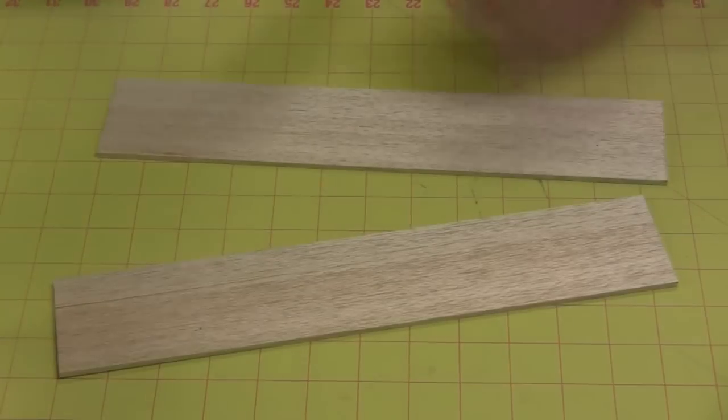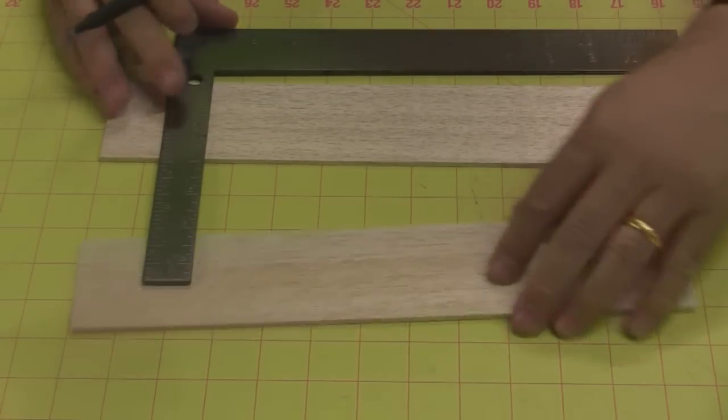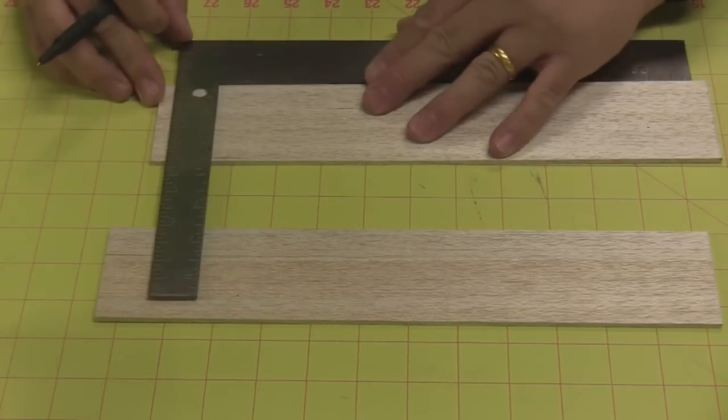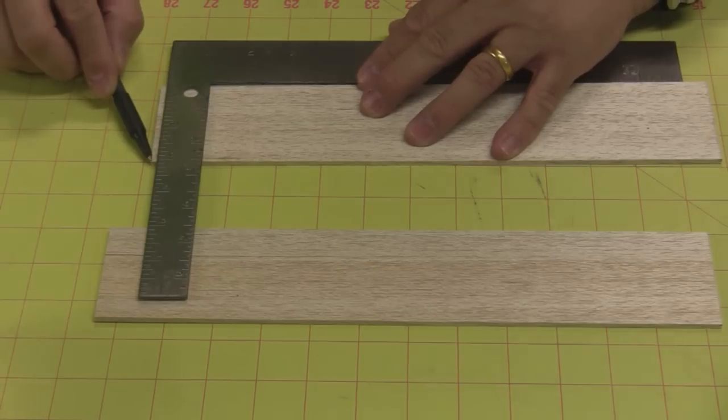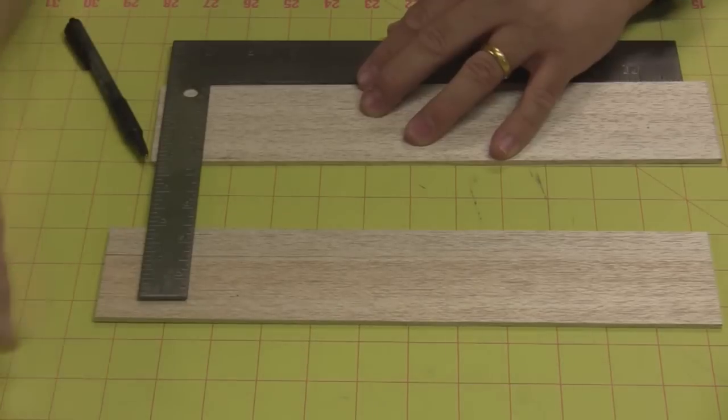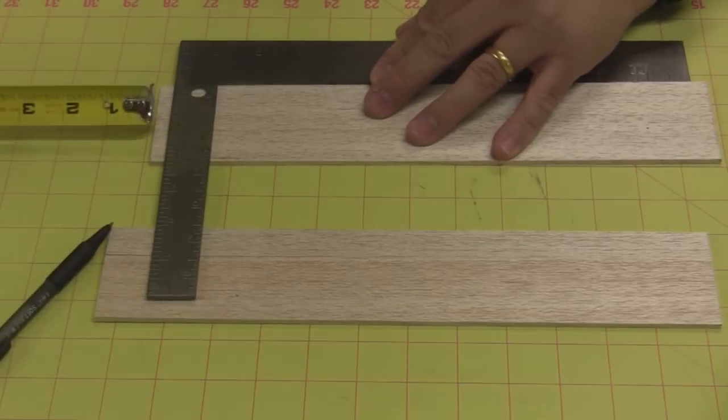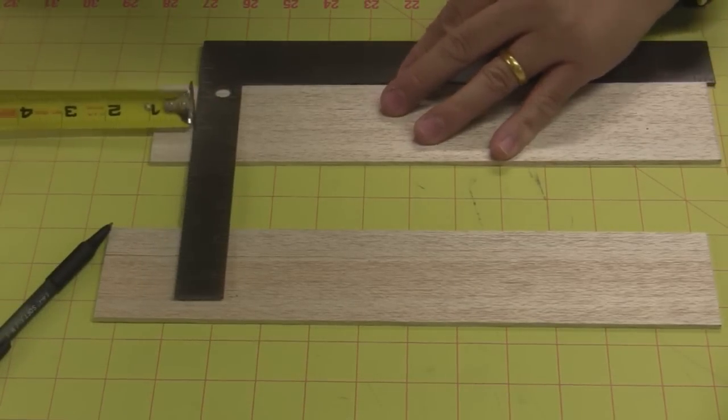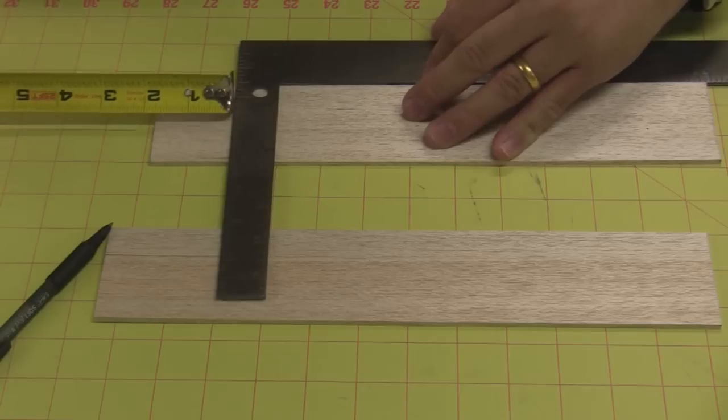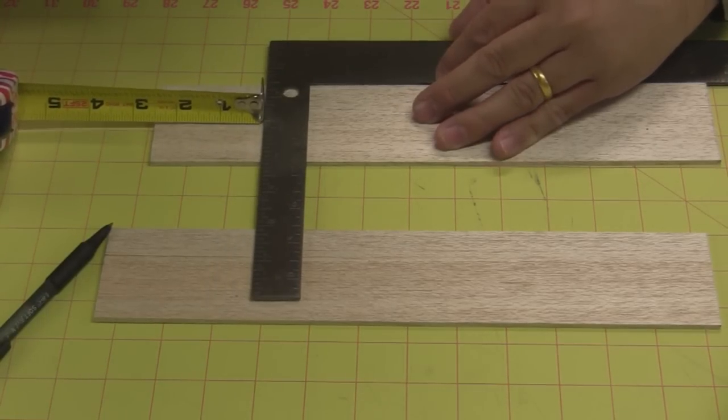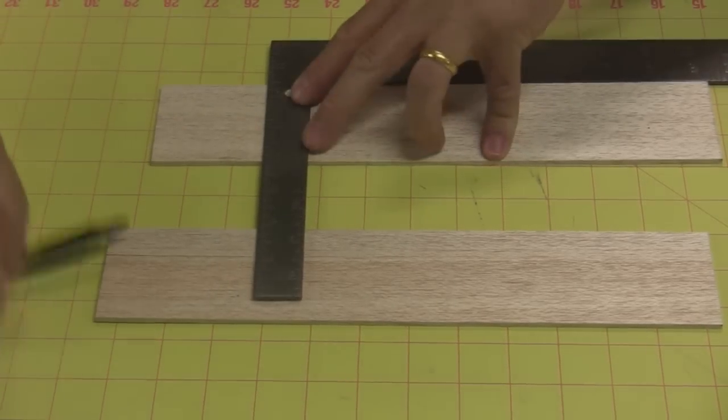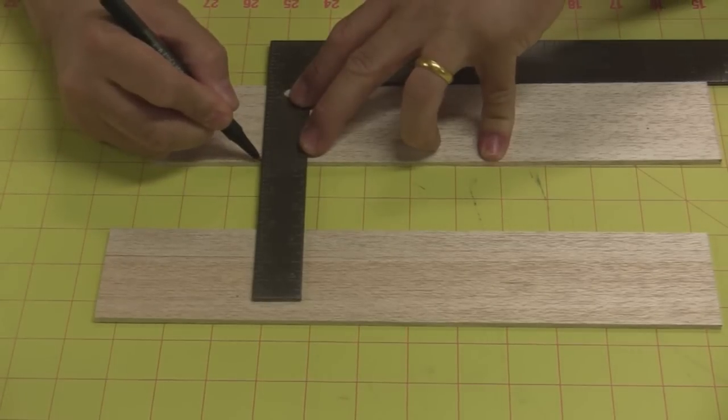Then we're going to flip the square over to do the other side. It's two and a half inches in from the edge. And just put a dot right on the edge.